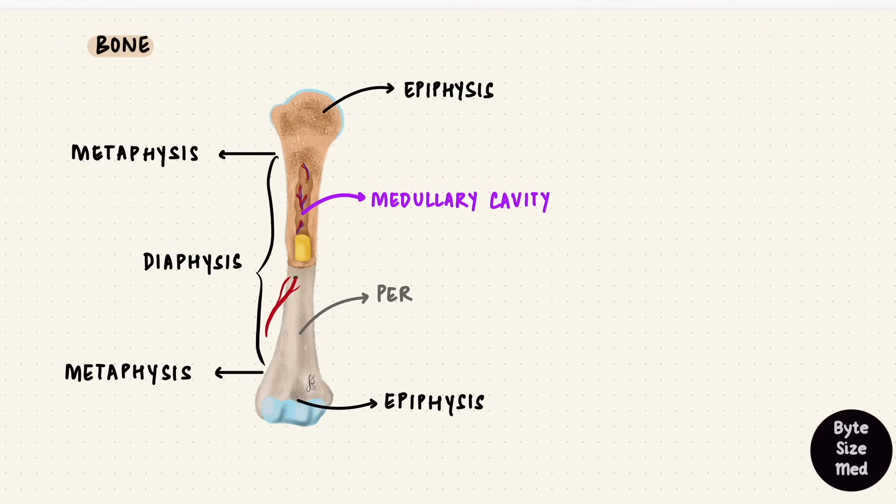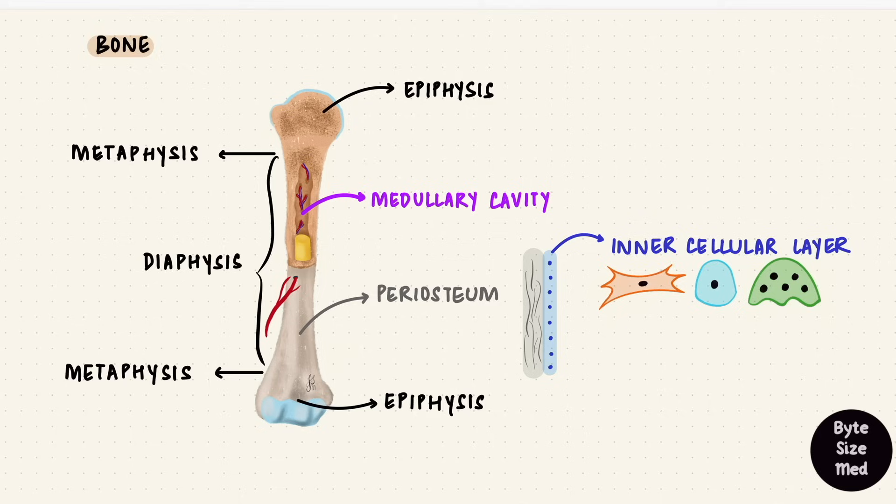The surface of compact bone is covered with connective tissue called the periosteum, and it's got an inner cellular layer, which has those osteoprogenitor cells, osteoblasts and osteoclasts. The marrow cavities are lined by endosteum, which also has these cells.